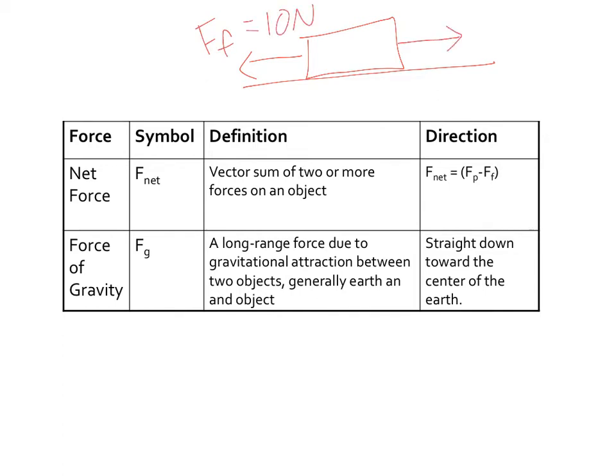But that'd be negative 10 because of the direction, right? And then say my applied force is, I don't know, we'll say 15 newtons, and that's positive direction. Net force is the difference between these two. So it'd be positive five. So it actually has an overall resultant of positive five newtons in the right direction.